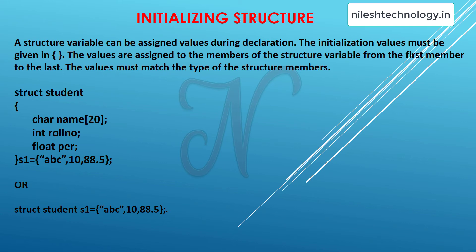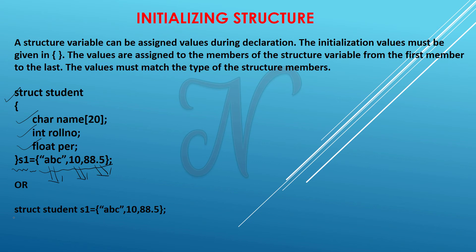For initializing a structure, if you want to assign some default values, here's how: declare one structure with three variables, then when creating a variable of that structure, assign values using curly brackets — for example, the student name, the roll number, and the percentage. Another way is to explicitly declare in main: struct student s1 and assign default values. By the order of variables, values are assigned — first variable gets the first value, and so on.